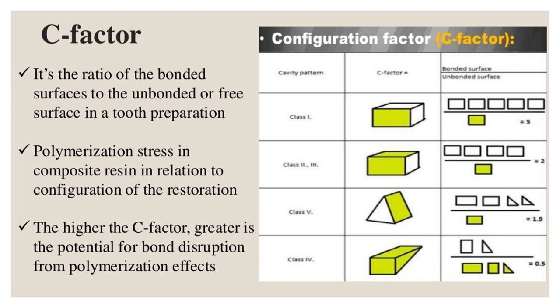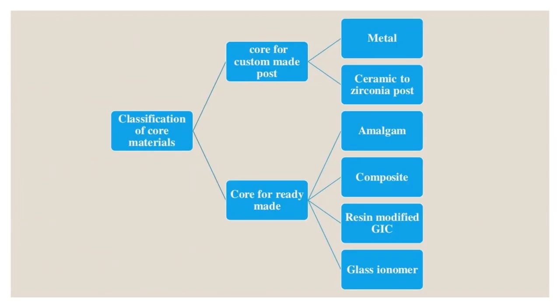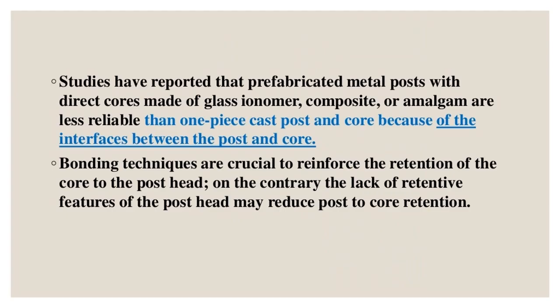Classification of core materials: for custom-made posts — metal or ceramic (zirconia); for ready-made posts — amalgam, composite resin, modified GIC, or glass ionomer. Studies report that prefabricated metal posts with direct cores of glass ionomer, composite, or amalgam are less reliable than one-piece cast post and core, because of the interfaces between the post and core. Bonding techniques are crucial to reinforce core retention to the post head.